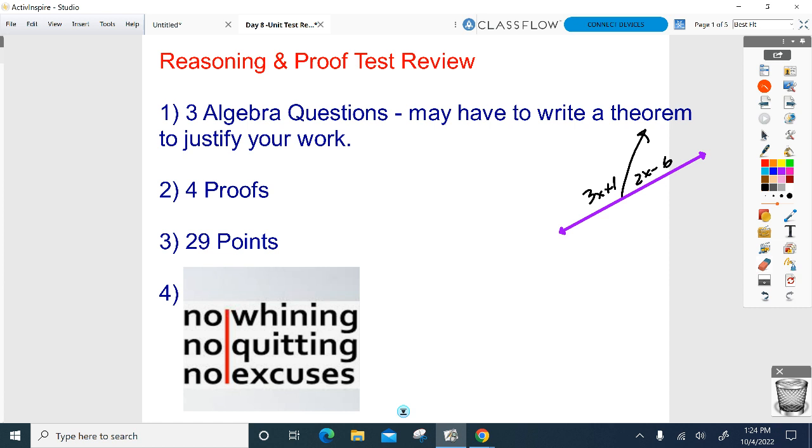Okay, so here's what I would expect for this problem. 3x plus 1 plus 2x minus 6 equals 180. Go ahead and work your algebra magic. Solve for x. Bring over the 5. Divide by 5.